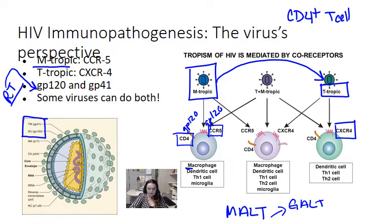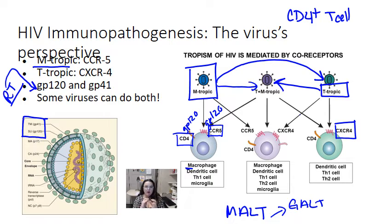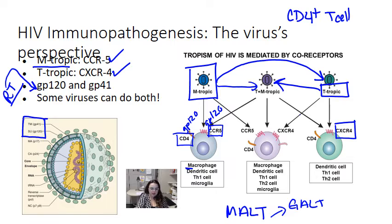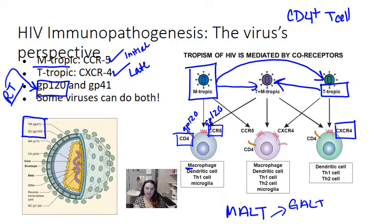Once the virus binds CXCR4, it's much better at infecting T cells, and that eventually leads to the progressive decline in CD4-positive T cells associated with AIDS. We start with an M-tropic virus; mutations lead to a T-tropic virus. Some patients have viruses that are both T- and M-tropic, and some have multiple strains. To summarize: M-tropic virus uses CCR5; T-tropic virus uses CXCR4 — both bound by GP120. Initial infection tends to be CCR5; later infection tends to be CXCR4 T-tropic.